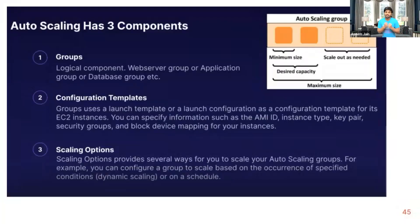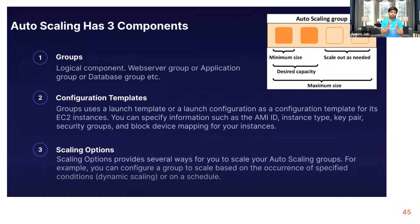Today I'm excited to share about auto scaling groups in cloud. The elasticity in cloud means it can expand and contract automatically — that's why cloud is so popular, especially AWS. I'm going to give a live demonstration of how auto scaling or elasticity works in cloud using the publisher-subscriber or producer-consumer model on a live AWS environment. First, let's understand what ASG — auto scaling — is.